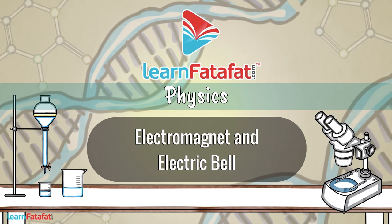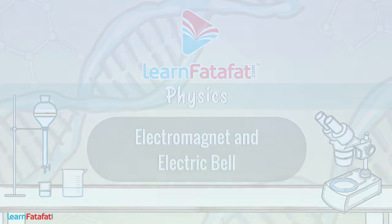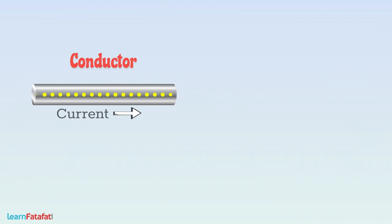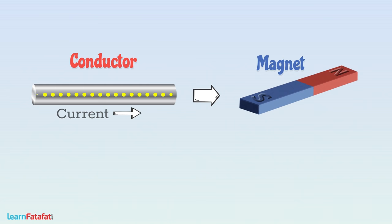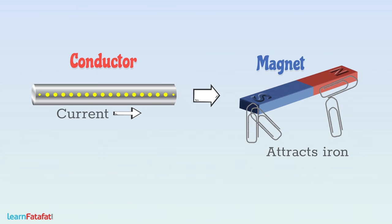Electromagnet and Electric Bell. When current flows through a conductor, it behaves as a magnet. A magnet has a very important property that it attracts iron. Does the conductor carrying current also attract iron?